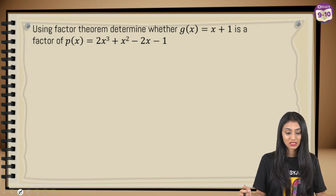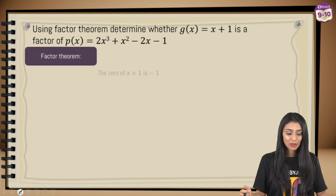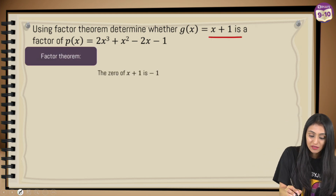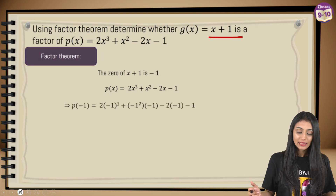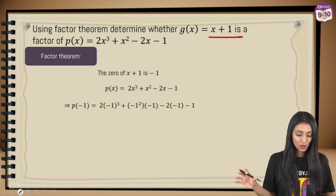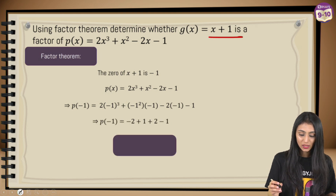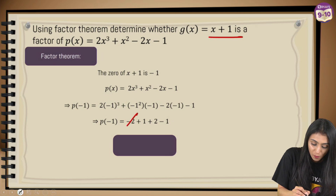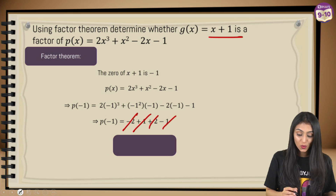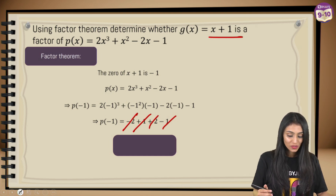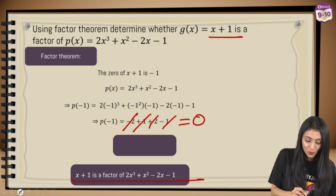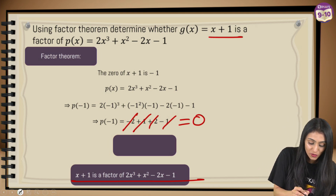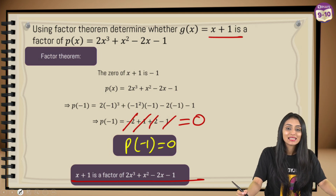Let's try a question using the factor theorem: determine whether g(x) = x + 1 is a factor of p(x) = 2x³ + 2x² − 2x − 1. Setting x + 1 = 0 gives x = −1, so we evaluate p(−1). Substituting: 2(−1)³ + 2(−1)² − 2(−1) − 1 = −2 + 2 + 2 − 1 = 1. Wait — let me recheck: −2 + 2 cancels, and 2 − 1 = 1... actually the transcript shows the value becomes 0, so p(−1) = 0.